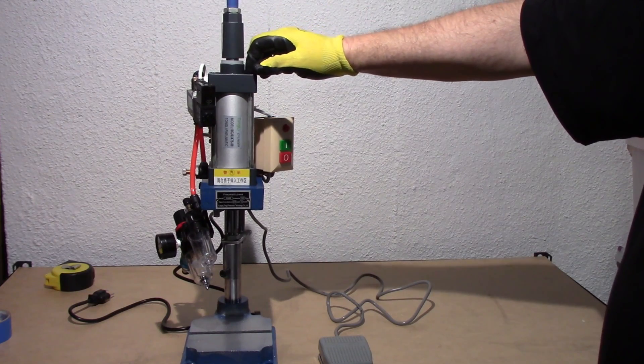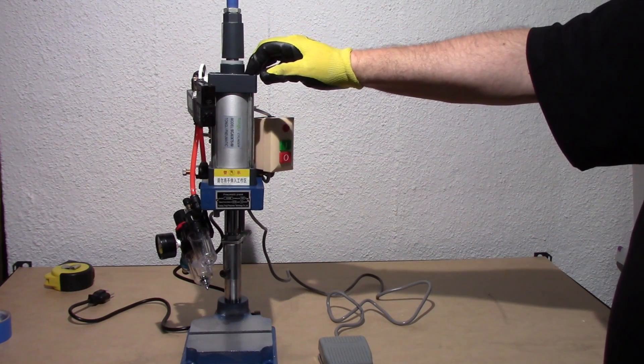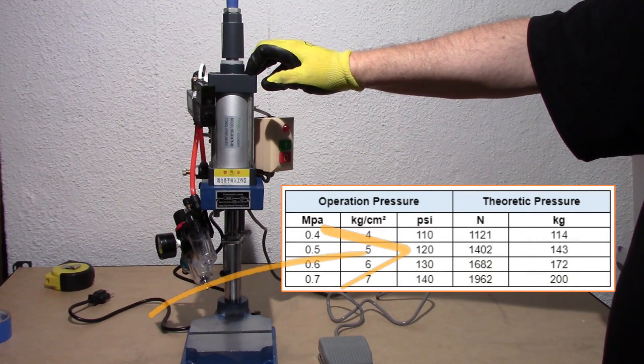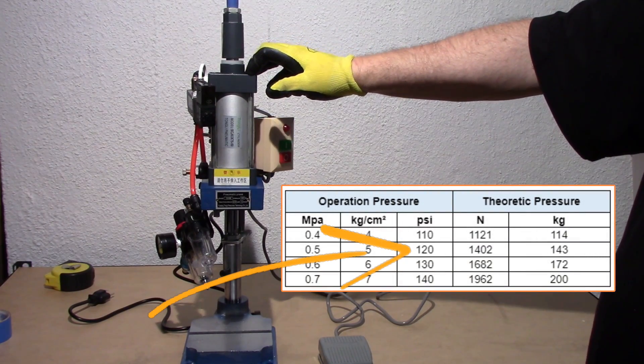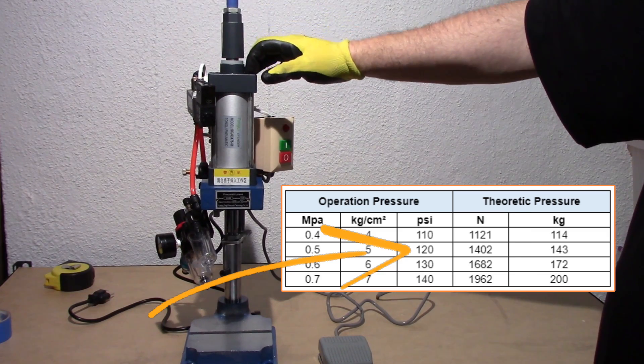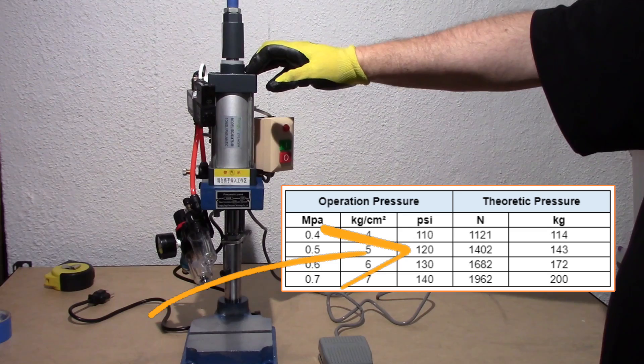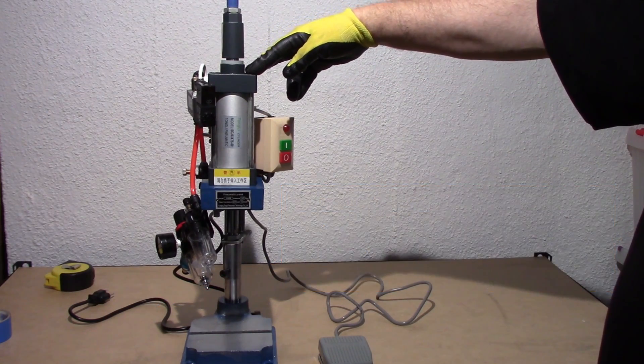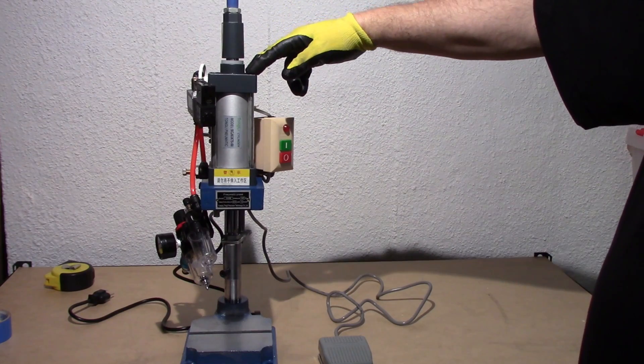With this one, this is a 200 kilogram, about 440 pounds at 140 PSI, which is sort of a little bit overstated because most air compressors, or at least prosumer or consumer air compressors, only go up to about 120 pounds. So I doubt we'll see that much out of it.